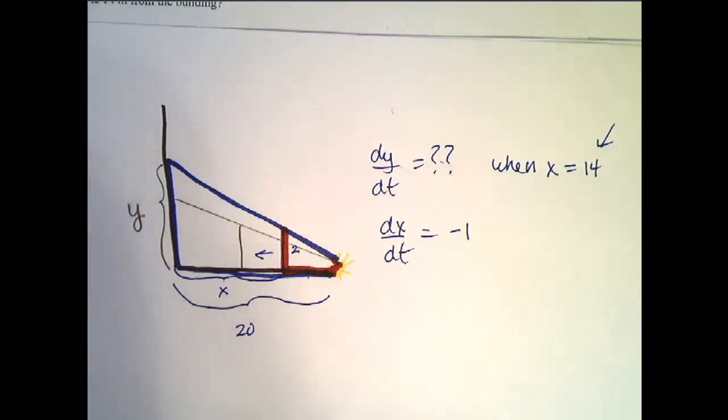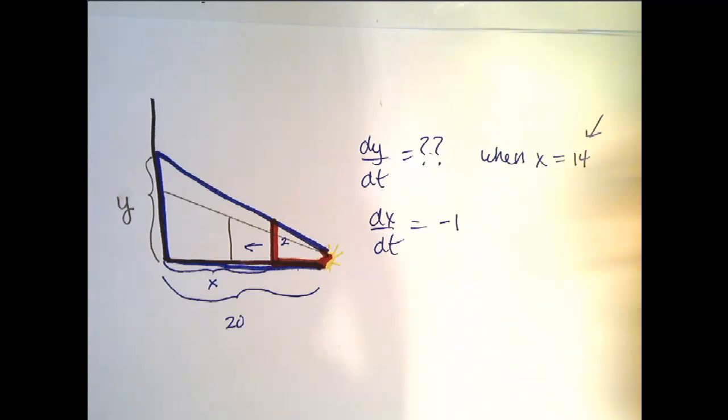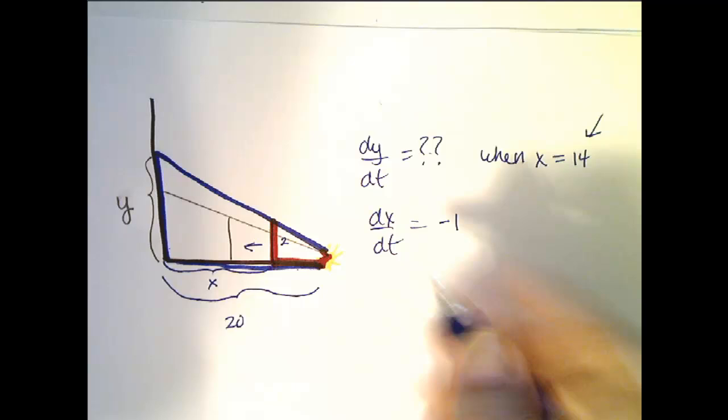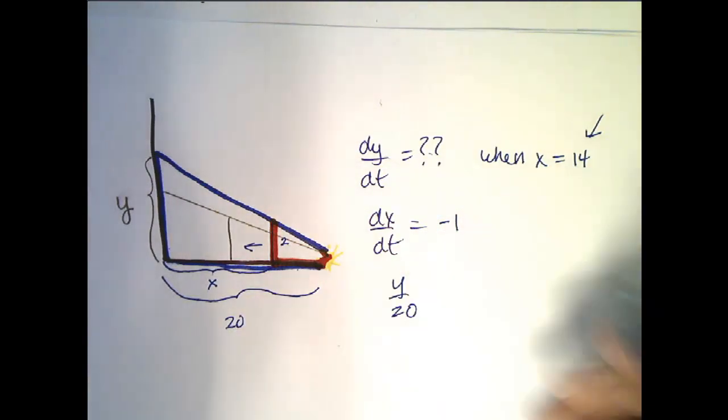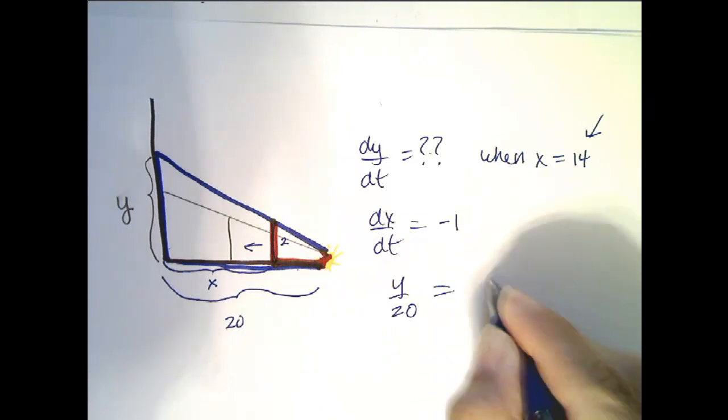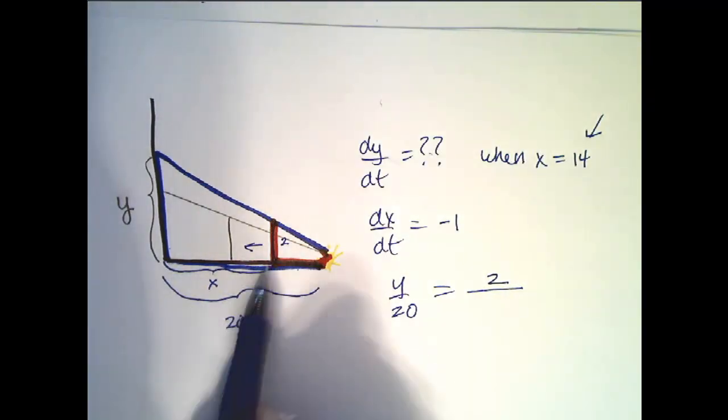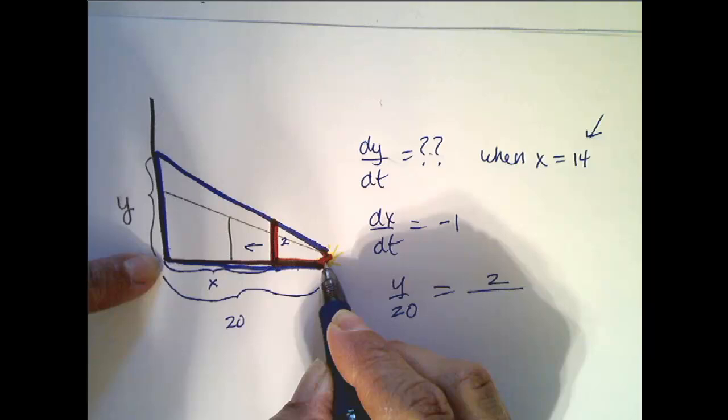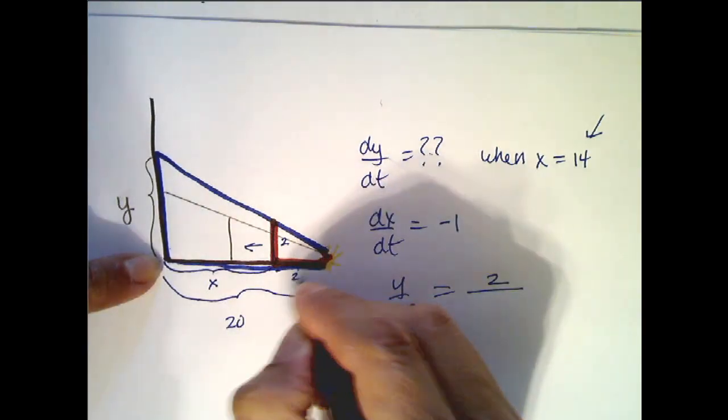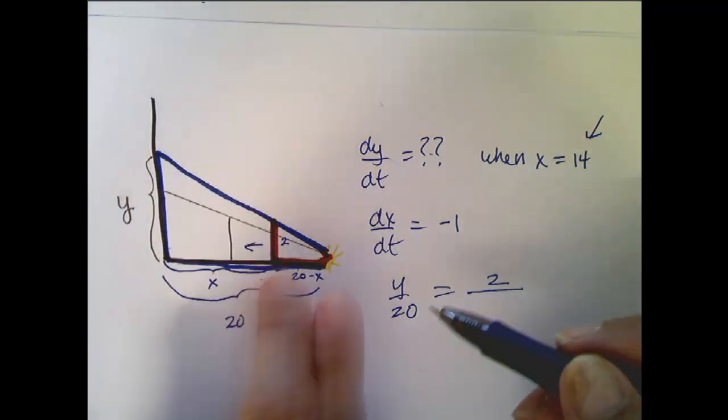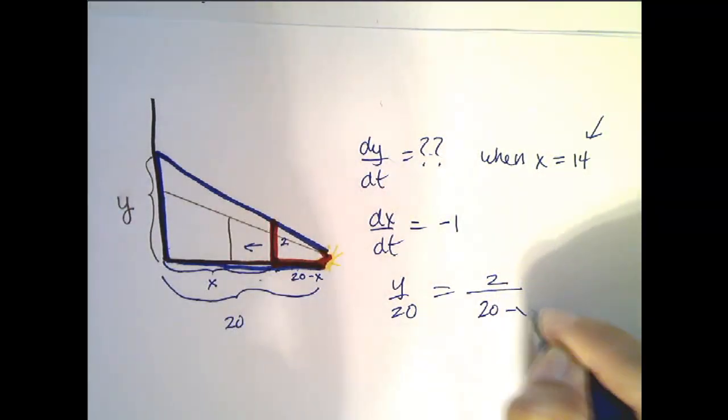So what does that mean? Well that means, there's lots of relationships, but one of which is, I could say Y is to 20 as 2 is to this distance. So 2 is to, and be careful, it's not X, because X is this distance right here. But, I want to be able to talk about this distance in terms of X. Well this is 20, and this is X, so this has to be 20 minus X. So Y is to 20 as 2 is to 20 minus X.